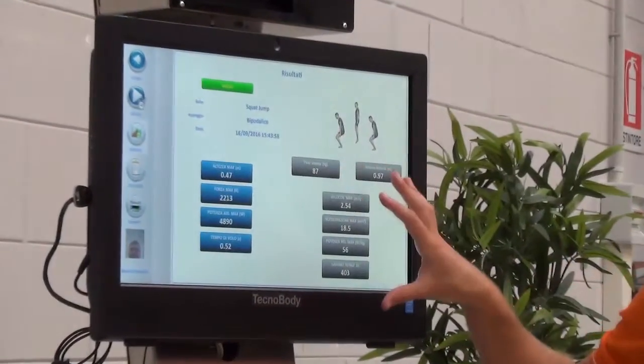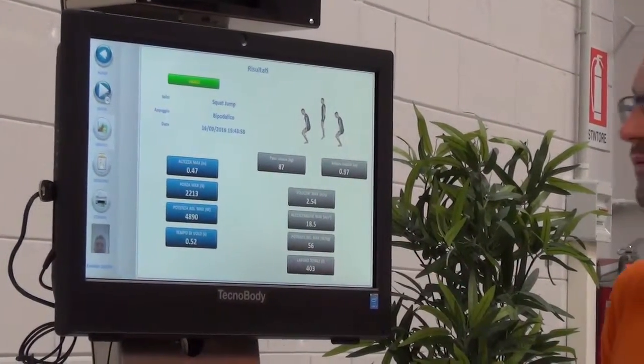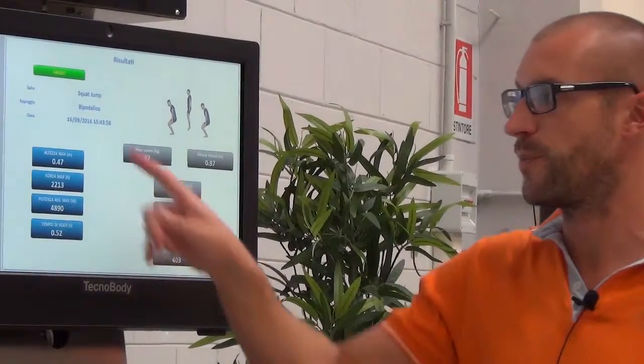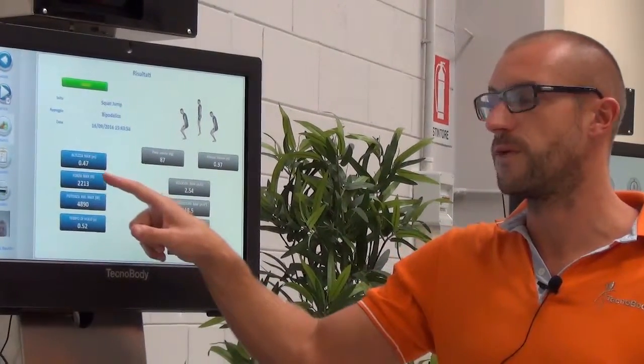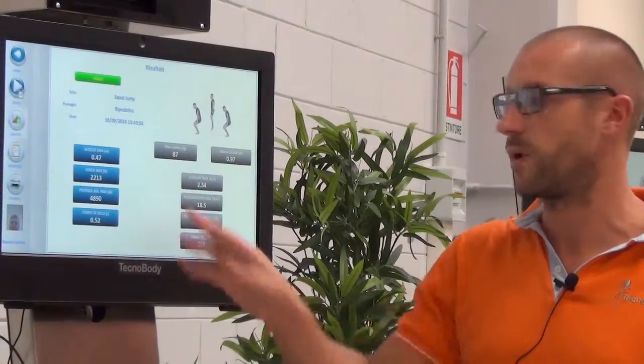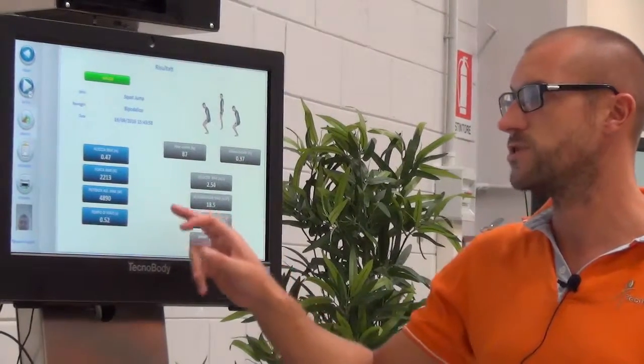Which kind of information the system is going to provide? It's going to provide information about the height of the jump, about the maximum force applied, the power both the absolute power and the relative power so compared to the body weight of the user.